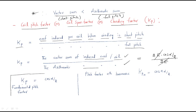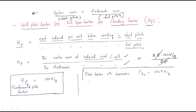So the pitch factor for the fundamental is kp = cos(α/2). This is for the fundamental only, i.e., the first harmonic. For the nth harmonic, the pitch factor becomes kpn = cos(n·α/2).